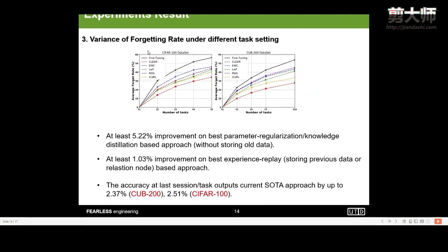Next, I will show the variance of the forgetting rate under different task settings. Our method could keep a stable and significant improvement compared with existing approaches. The results show that our approach could reach at least 5.22% improvement on the best parameter regularization or knowledge distillation-based approach. Also, compared with the exemplar storage-based approach, CLEAR could also reach at least 1.03% improvement.